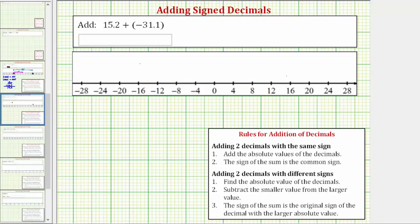We're asked to add 15.2 plus negative 31.1. The first thing to recognize about this sum is that the negative 31.1 will outweigh the positive 15.2, and therefore this sum will be negative. Now let's find this sum using the formal rules for adding signed decimals, and then we'll also show the sum on the number line.